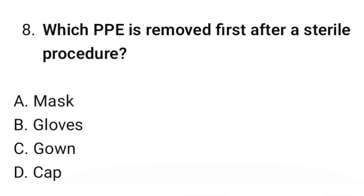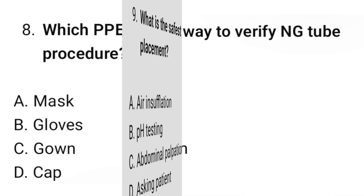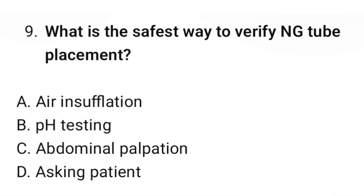Question number 8: Which PPE is removed first after a sterile procedure? The correct option is B: Gloves. Question number 9: What is the safest way to verify NG tube placement? The correct option is B: pH testing.